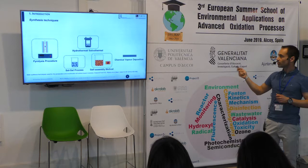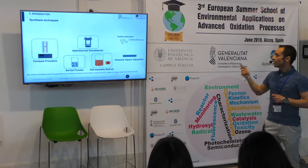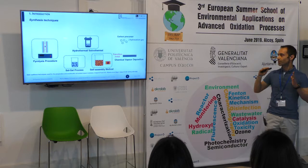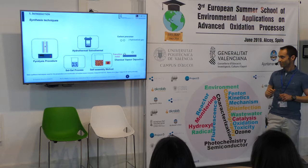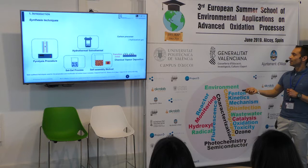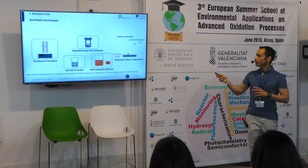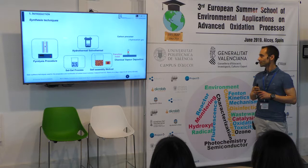Another technique is chemical vapor deposition. In this case, the carbon precursor is a hydrocarbon gas, and a transition metal catalyst is used. If a flat surface of metal is used, you will obtain a graphene sheet. Whereas if a metal particle is used, you will promote the growth of carbon nanotubes.